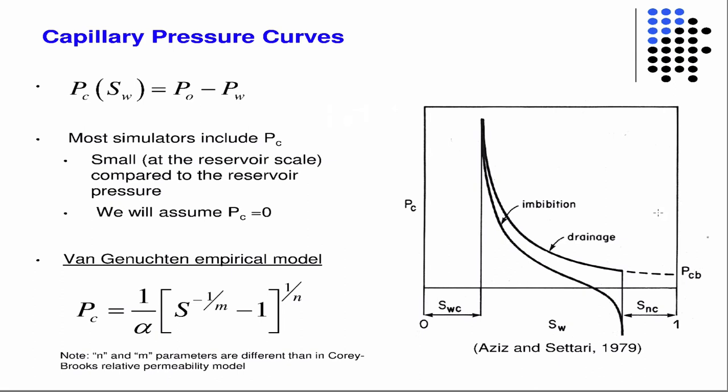We have capillary pressure effects. So there's also, I guess, Brooks-Corey capillary pressure effect empirical model, but then there's Van Genuchten, did I say that right? I'm a mechanical engineer. I didn't study all this when I was an undergraduate.